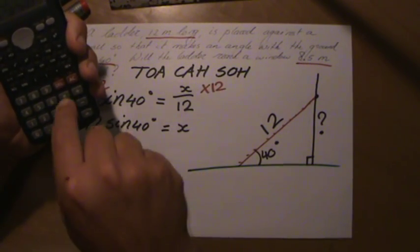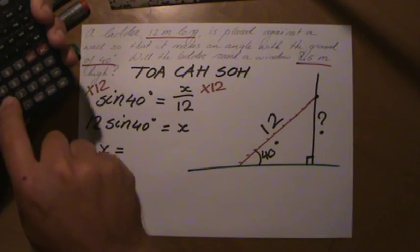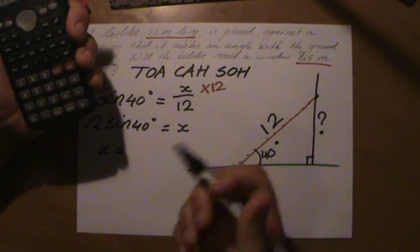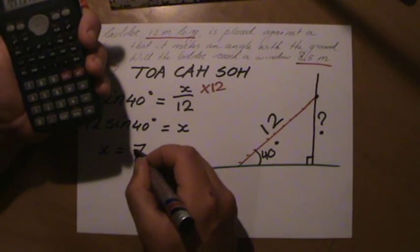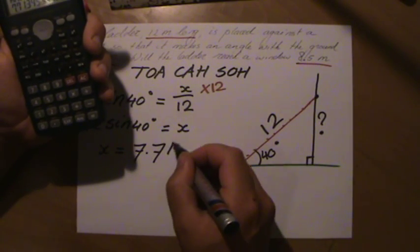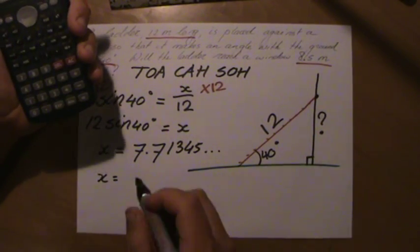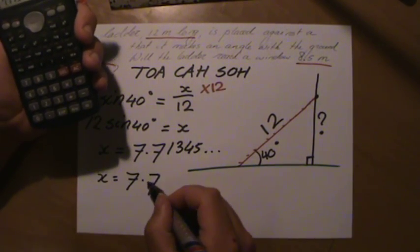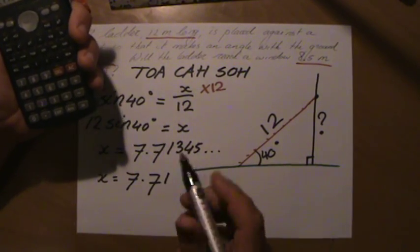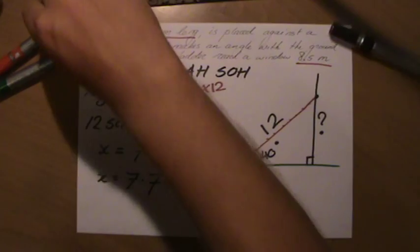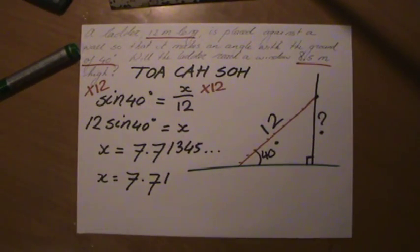Times 12 equals, and then we can write that down. It says 7.71345 and it continues. Let's do that quickly to three significant figures.